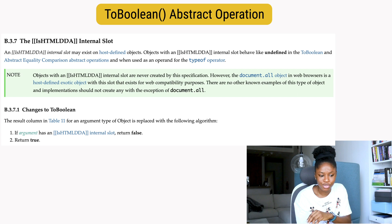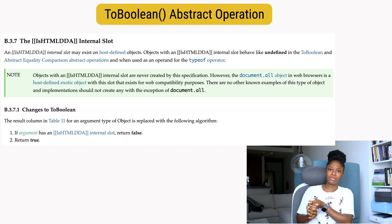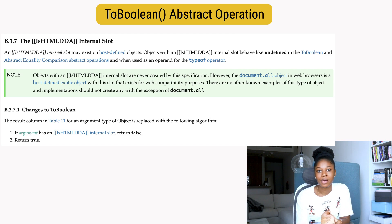The IsHTMLDDA internal slot is an internal slot, and objects with this particular internal slot behave like undefined in some operations, including ToBoolean, which is what we're focusing on in this video. It goes on to say the document.all object in browsers is the only object with this internal slot, and it exists for web compatibility.